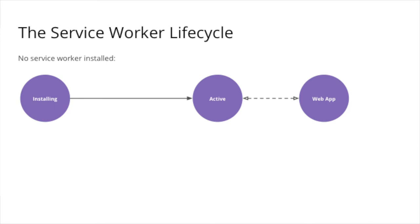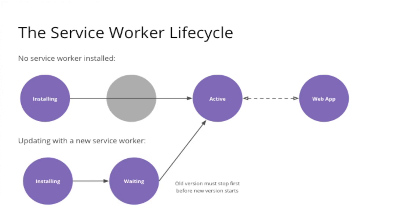If you have no previous service worker, it will be installed for the first time and then become active, starting to intercept network requests from your web application. When updating a service worker, the new version will be installed but will be in a waiting state until the previous version has no client tabs interacting with it — then the new version moves into the active state. This is usually where you start to get headaches, where you're not using the service worker you think you are.